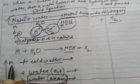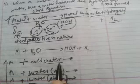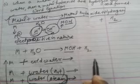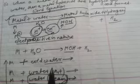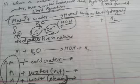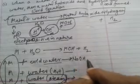It depends upon the chemical reactivity of the metal. If the metal is very reactive in nature, then it easily reacts with cold water and the product is formed — metal hydroxide and hydrogen gas. For example, sodium is a very reactive metal, so sodium easily combines with cold water, it forms sodium hydroxide and hydrogen gas is formed.